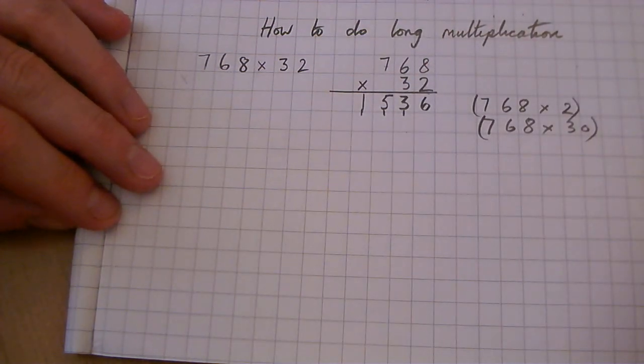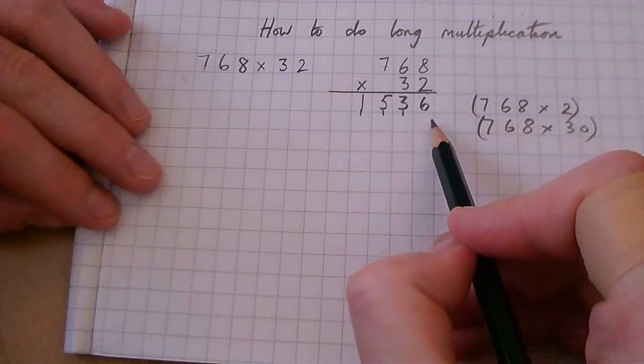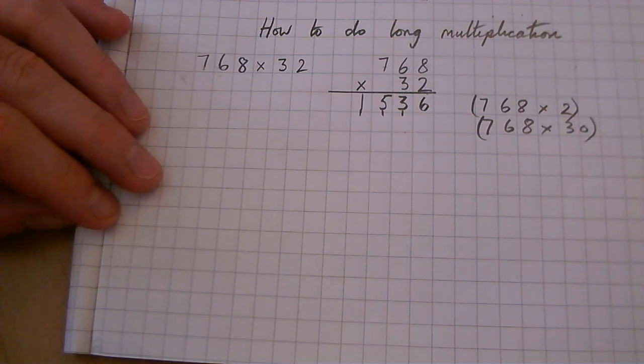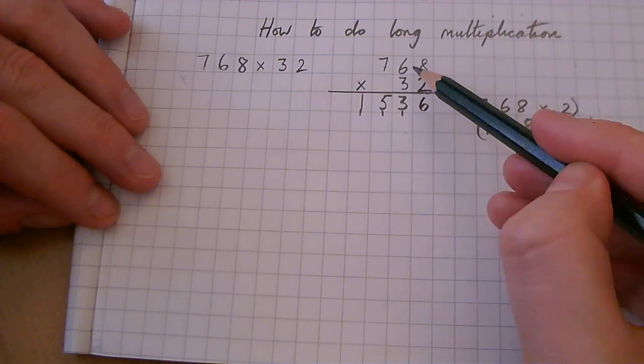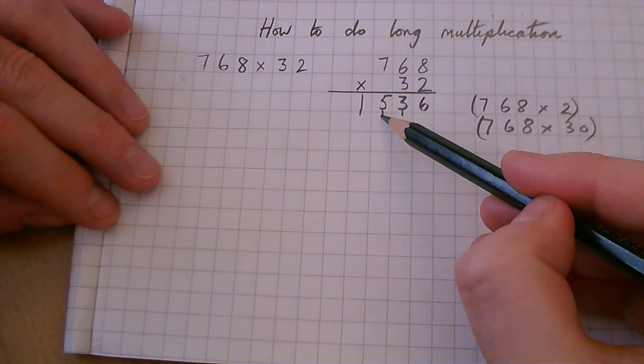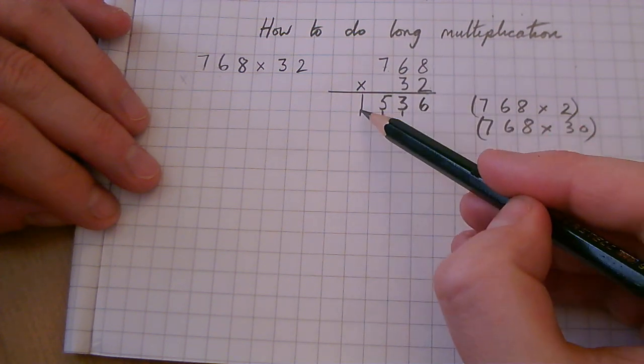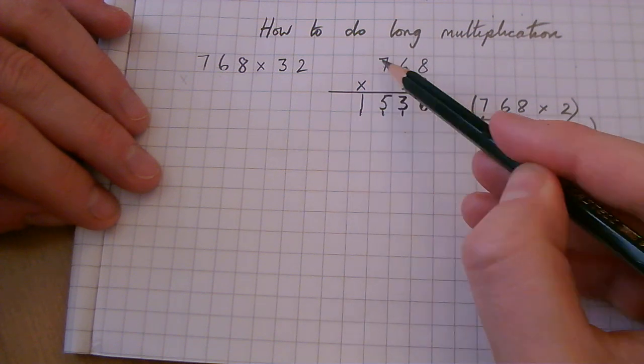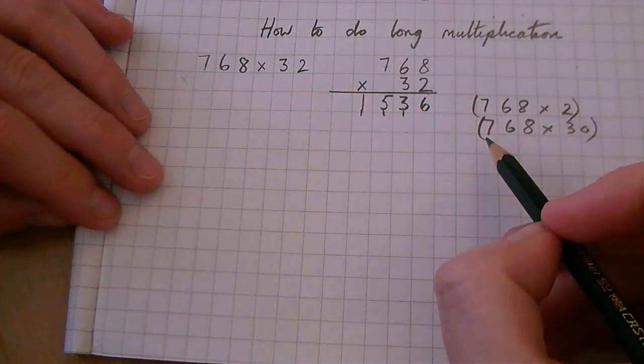An important part of long multiplication is to check as you go along. If you make a mistake here, anything that you add up at the end is going to be wrong. So it's really important to check that you're doing it correctly. 2 times 8 is 16. 2 times 6 is 12 and the 1 is 13. 2 times 7 is 14 and the 1 is 15. And there was nothing else to do so the 1 just goes in the box there. Let's look at the next line.